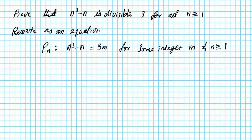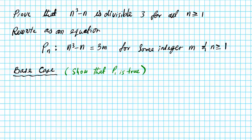Let's go ahead and start with the foundation of our proof by induction, which is known as the base case. For the base case, our goal is to show that P(1) is true. Why do we start from one? Because n is greater than or equal to one, so the first acceptable input into our expression is one. That's not always the case, so always make sure you look at the condition before you start working with your base case.